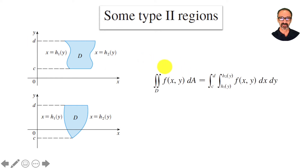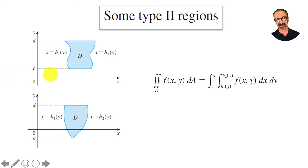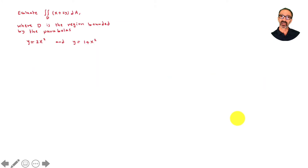One mistake students make: you have to know which curve is below and which is above — you can't switch them. Just like in Calculus 1, with two functions you need to know which is above and which is below. For a sideways region in type two, the lower curve comes first. Keep that in mind. Now, let's evaluate the double integral of x plus 2y.